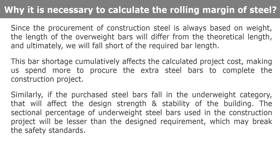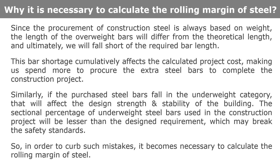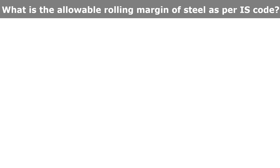Similarly, if the purchased steel bars fall in the underweight category, that will affect the design strength and stability of the building. The sectional area of the underweight steel bars used in the construction project will be lesser than the design requirements, which may break safety standards. So in order to curb such mistakes, it becomes necessary to calculate the rolling margin of steel.